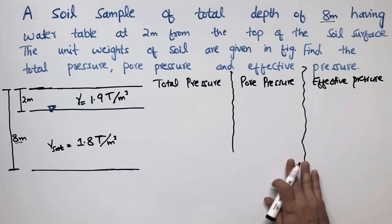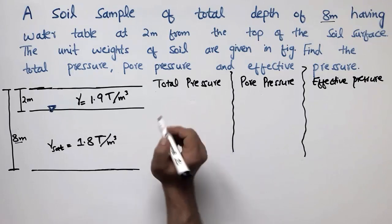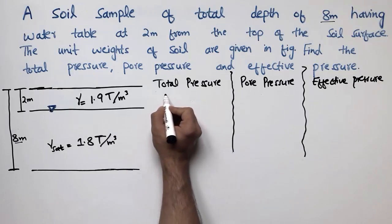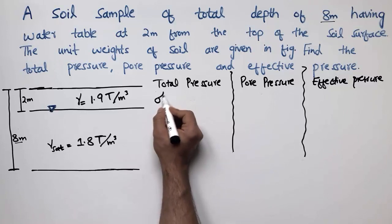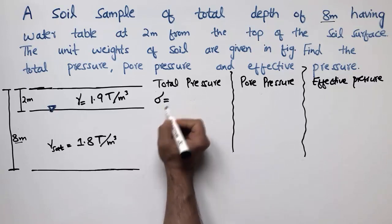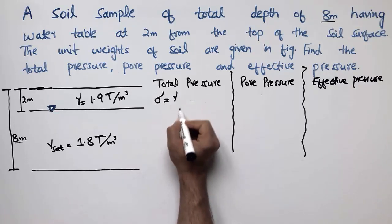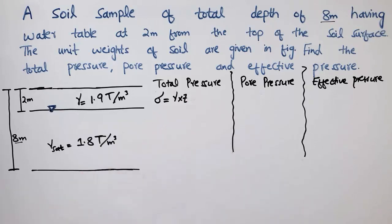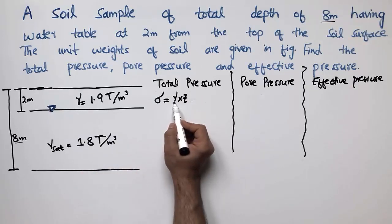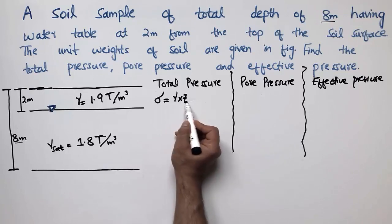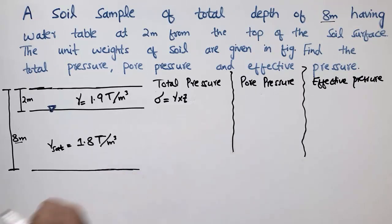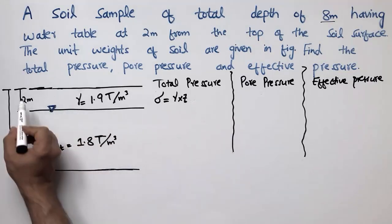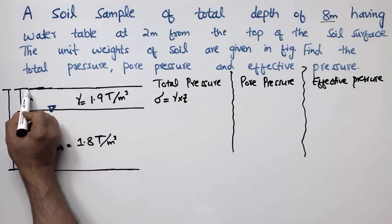To find the total pressure, we know that total pressure is represented by sigma. It is equal to the unit weight of the soil (gamma) multiplied by the depth (Z). By multiplying the unit weight of the soil with the depth, you can find the total pressure at any point.